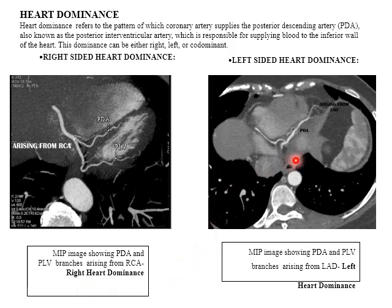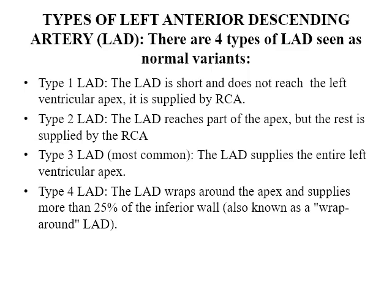In left heart dominance, the posterior descending artery and posterior left ventricular artery arise from the left anterior descending artery. There are four types of left anterior descending artery which are normal variants. In type 1, the LAD is short and does not reach the left ventricular apex and is supplied by the right coronary artery. In type 2, it reaches part of the apex but the rest is supplied by the right coronary artery.